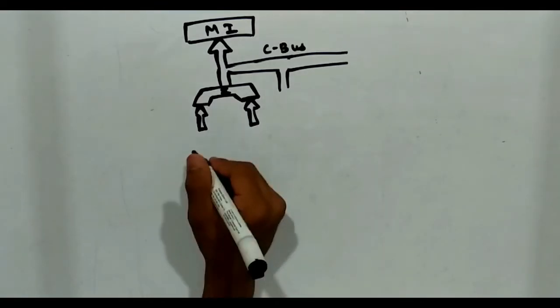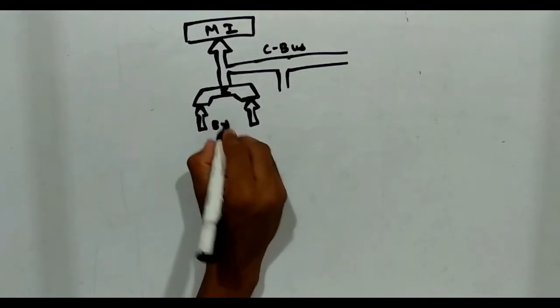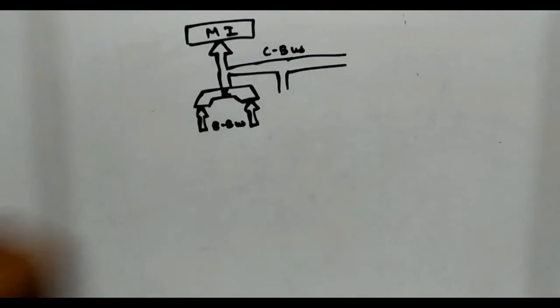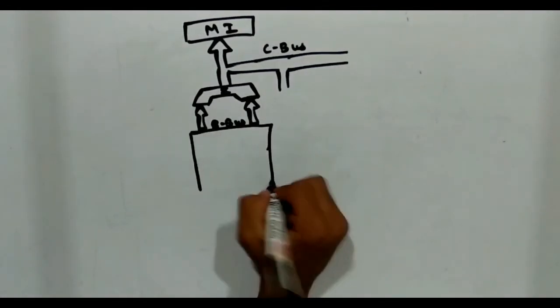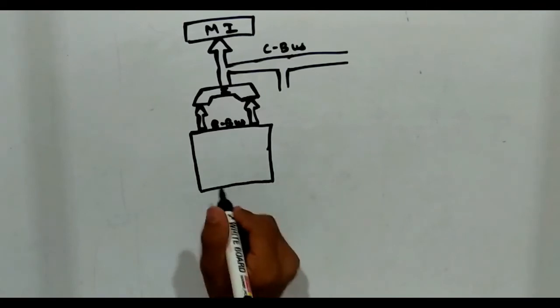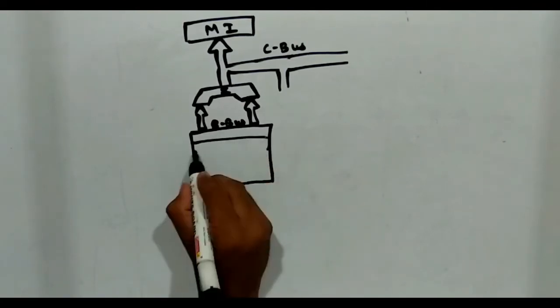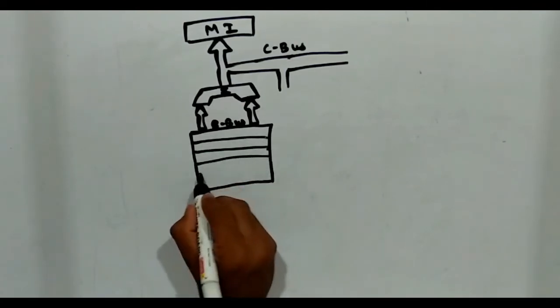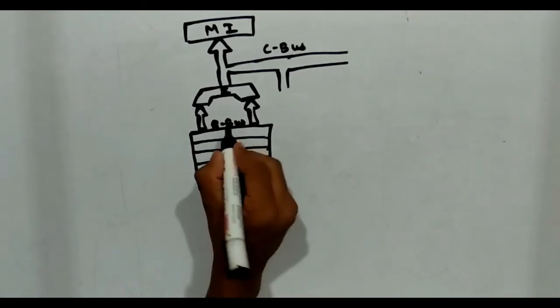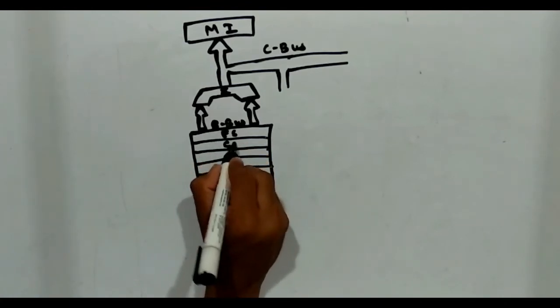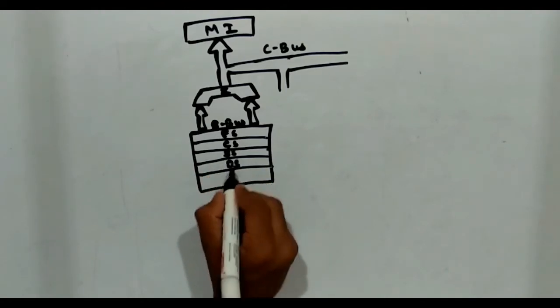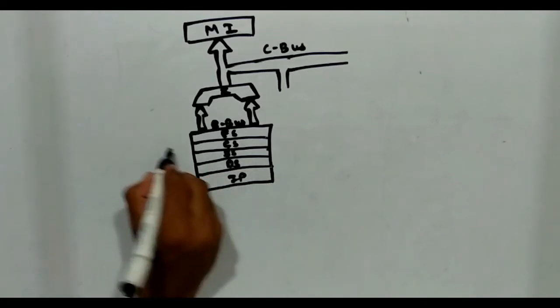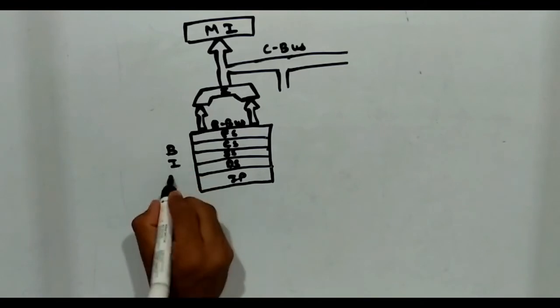Now we are going to draw the bus interface unit, which is, here is B bus. And this is bus interface unit. Which has extra segment, code segment, stack segment, data segment and IP. This is bus interface unit.